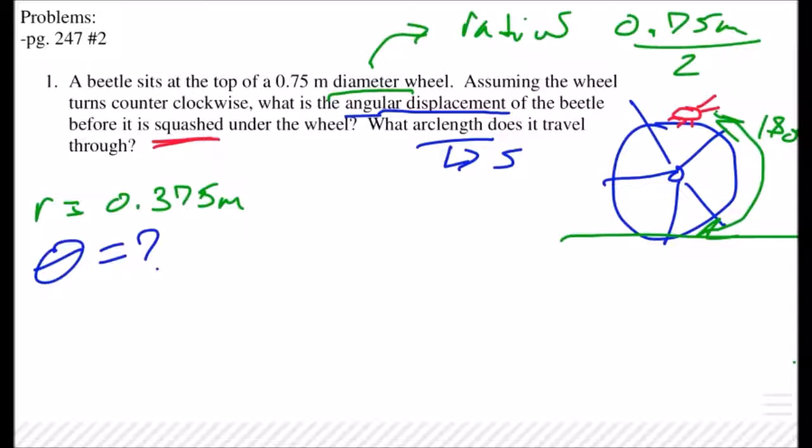We just said that theta has to be 180 degrees, right. So if we're going to be using our arc length formula, can we use 180 degrees? Very good, that has to be in radians. So we're going to say 180 degrees over one, and then we can say that 180 degrees equals how many radians? π radians, very good.